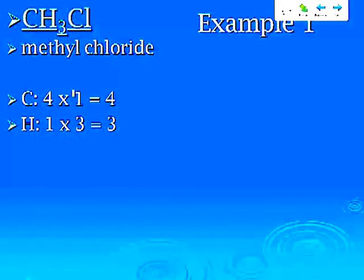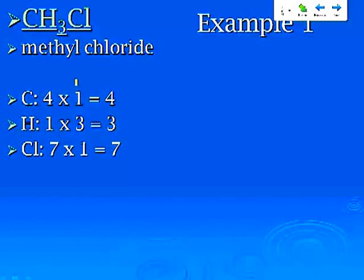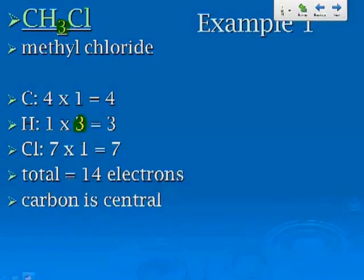So let's start with methyl chloride. We would not know how to name this compound right now. Carbon, there is one carbon with four valence electrons for a total of four. Hydrogen has one valence electron per hydrogen, there are three of them, so three total. Chlorine has seven valence electrons, there's one of them. When finding valence electrons, you just move across the periodic table and count. So the total is 14 electrons.